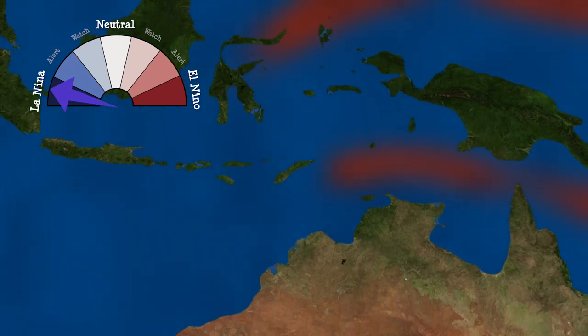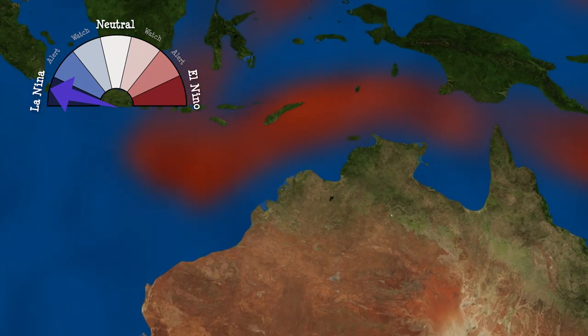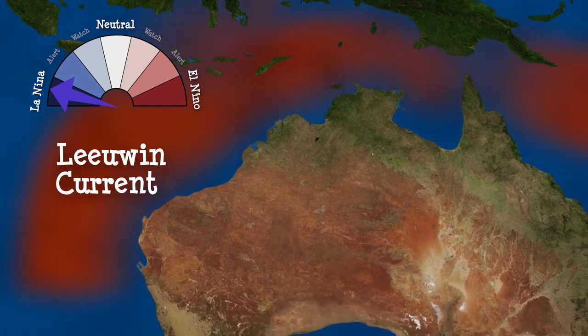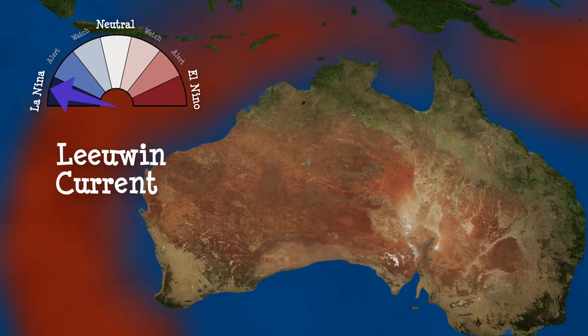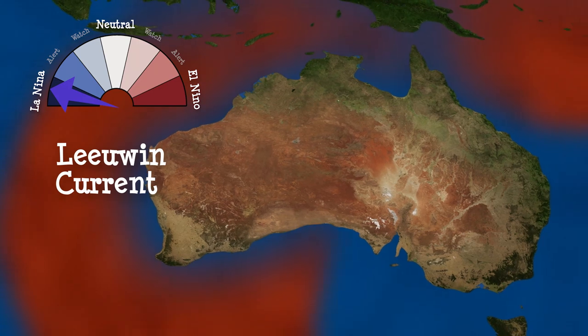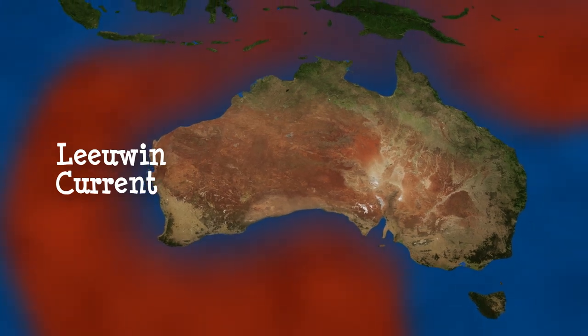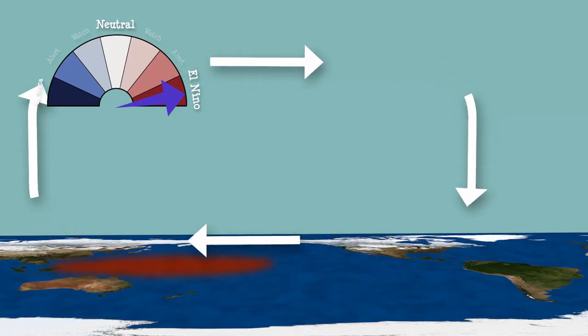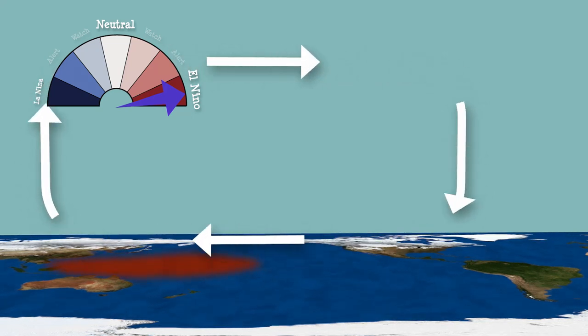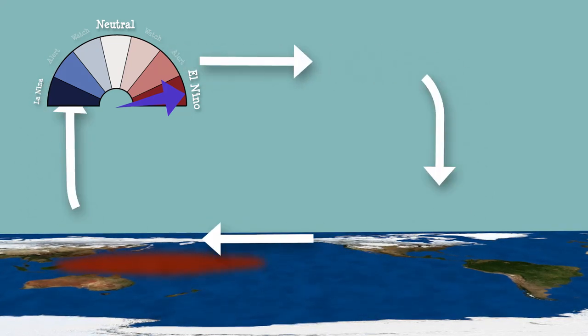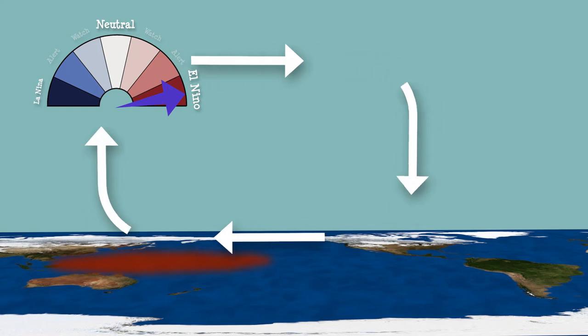This warm water escapes through the gap between Indonesia and Australia to supercharge the Lewin Current, a 5,500-kilometre-long flow of warm waters along the western Australian coast. But, like an athlete, the winds can't keep pumping at this speed forever.